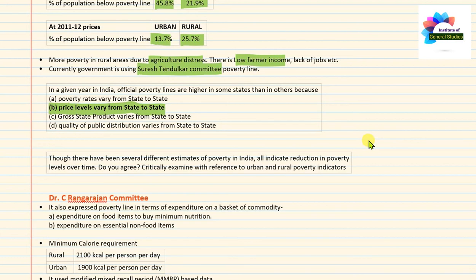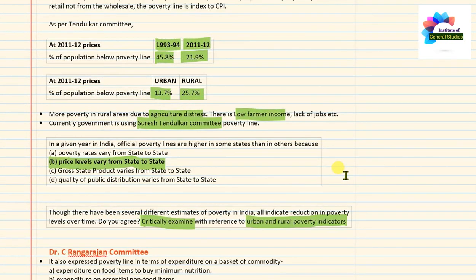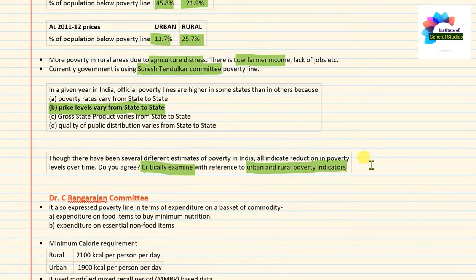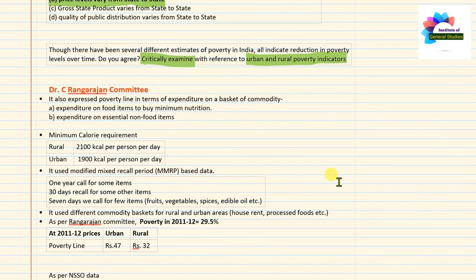For critical examination questions, you should provide rural and urban poverty data. 'Critically examine' means discussing two sides of the statement — so present different poverty estimates and their drawbacks. The drawbacks will be discussed when the multidimensional index of poverty is taught. At the end, mention government development initiatives for poverty reduction and what more is required. In the next lecture, we will study the C. Rangarajan Committee, Task Force on Poverty Alleviation by Niti Aayog, and the Multidimensional Poverty Index.